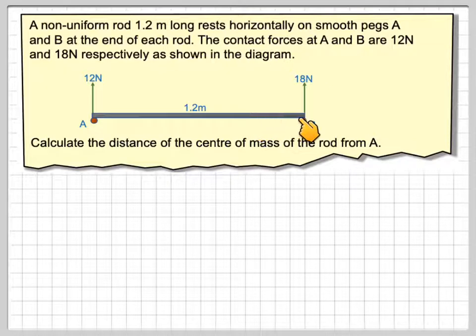So here we have a rod, a peg here and a peg here. There will be a contact force here of 12 newtons going up and a contact force here of 18 newtons going up. The rod is 1.2 metres long. Calculate the distance of the centre of mass of the rod from A.